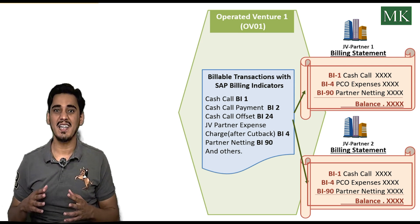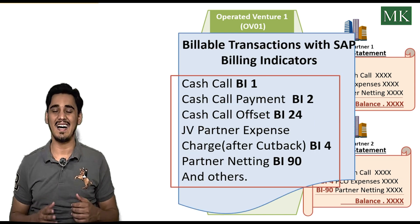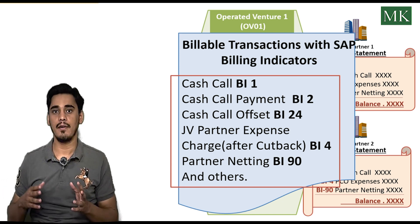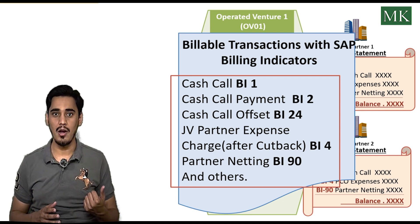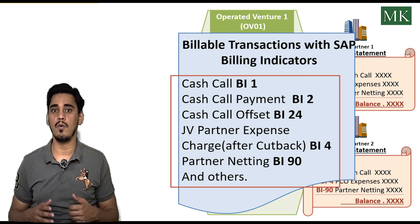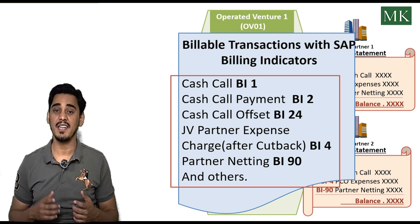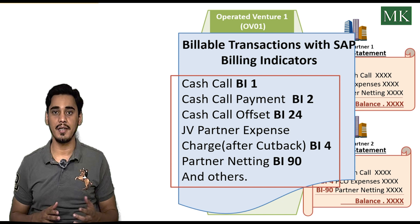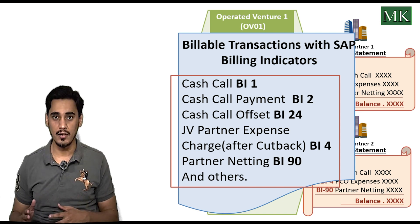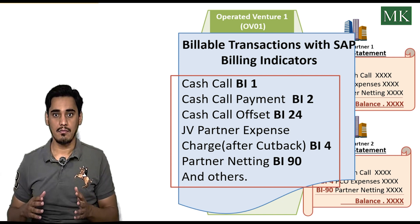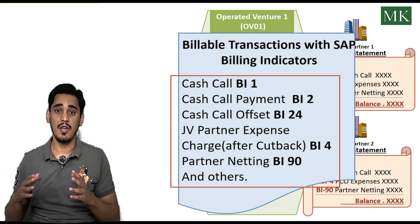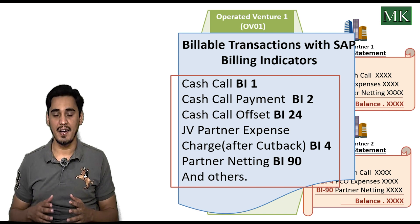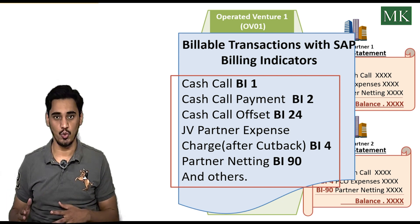Billing indicators are also used in joint venture clearing transactions like partner netting. The most commonly used billing indicators are: billing indicator 1 for cash call transactions, billing indicator 2 for cash call payment, billing indicator 24 for cash call offset, billing indicator 4 for joint venture cutback expense, and billing indicator 90 for partner netting transactions.